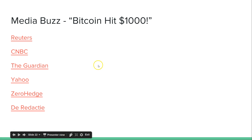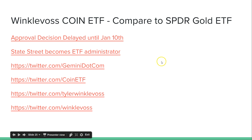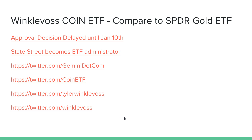The ETF — an exchange-traded fund where they would have to buy Bitcoin. The general idea is that this would lift Bitcoin's price similar to how the gold ETF, the SPDR ETF, did for gold. I've listed some Twitter accounts to follow if you're interested in getting the latest on the Bitcoin ETF.